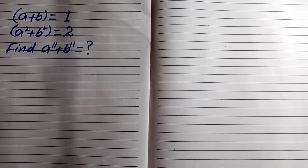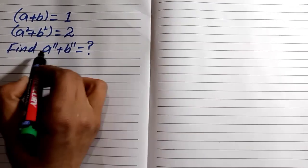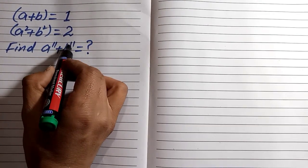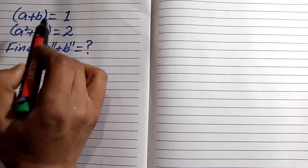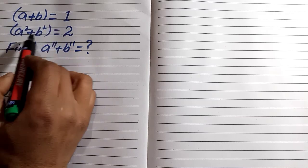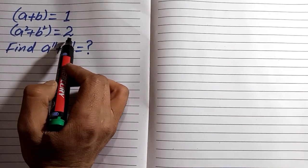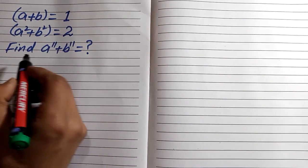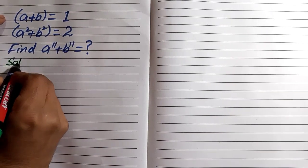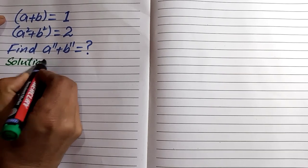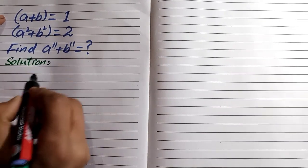Hello everyone, welcome to another video. In this math olympiad algebraic equation, we are finding the value of a power 11 plus b power 11. We are given a plus b equals 1 and a squared plus b squared equals 2. So we are going to the solution.